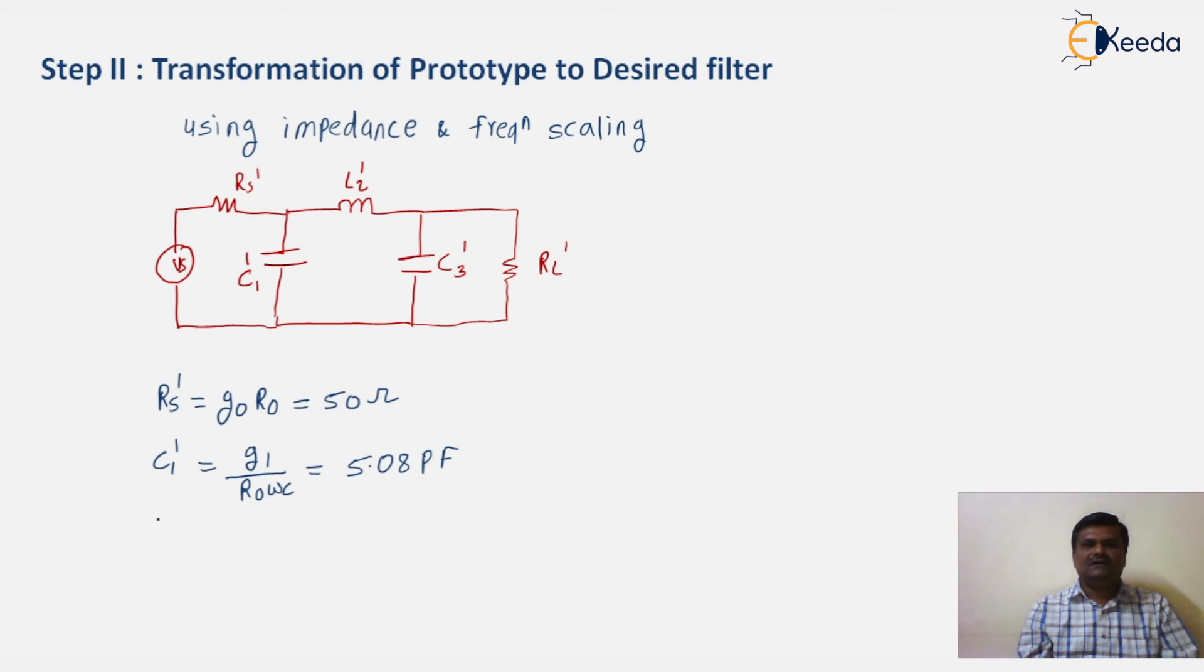Then L2 dash equal to G2 R0 by Omega C. Its value is 8.72 nanohenry.